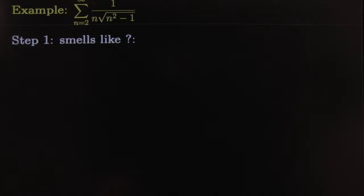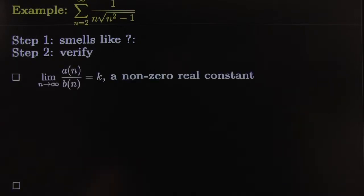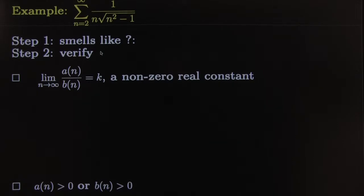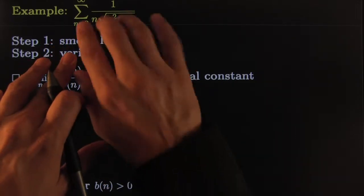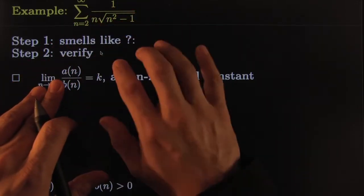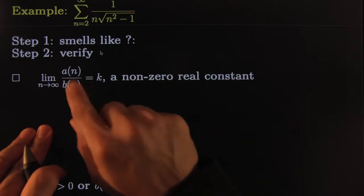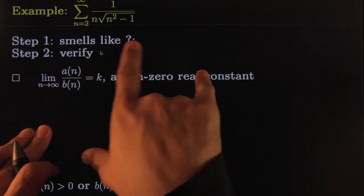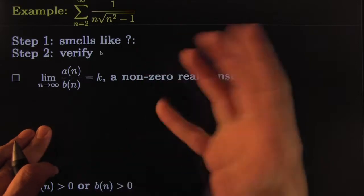Alright, so for now I'm going to finish up with this easy little example. We're going to go through the same steps as always. What we do is we try to do step one here: what does it smell like? And then we try to verify, finding out this limit, and hopefully we can see that it smells like something easier to deal with.